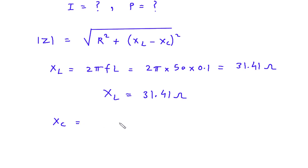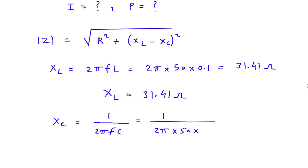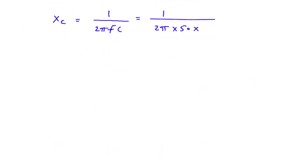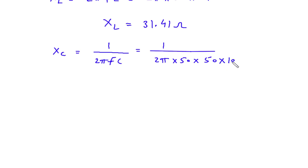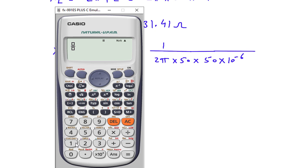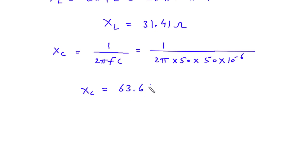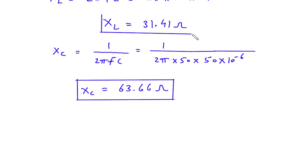Next is XC. XC equals 1 upon 2 pi F C. So it is 1 upon 2 pi, F is 50 hertz, and C is capacitance with value 50 microfarad, that is 50 multiplied by 10 to the power minus 6. Calculating this gives 63.66 Ohm. This is the value of capacitive reactance, and 31.41 Ohm is the value of inductive reactance.